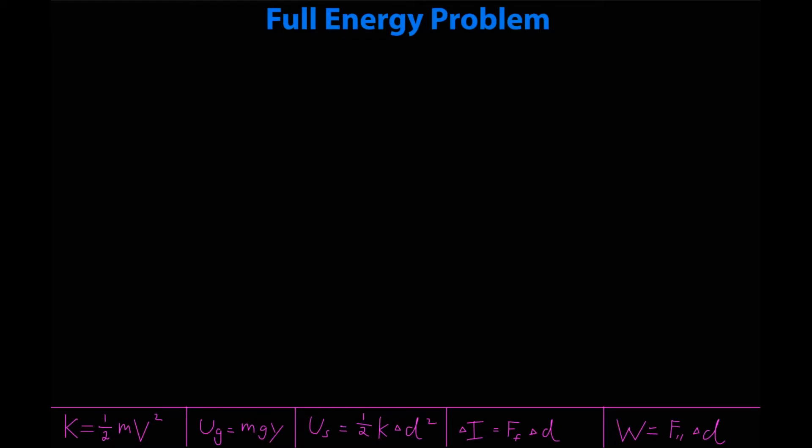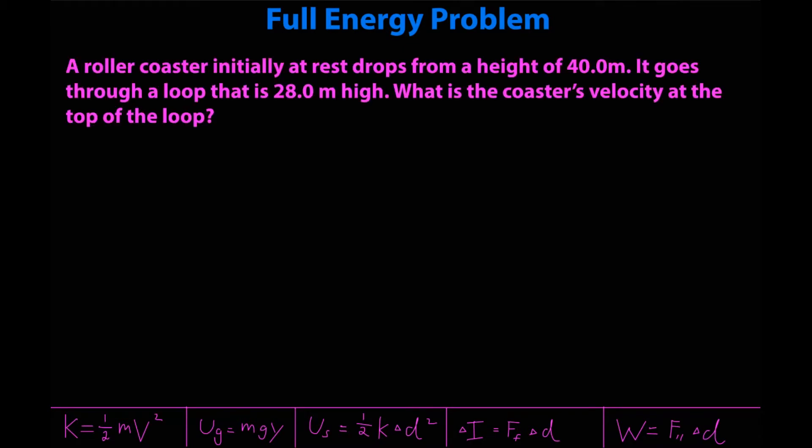Hello everyone and welcome back. Let's take everything we have learned and do a real energy problem. Before we do the real energy problem we're going to do a bit of a warm-up. It uses all the same techniques but it's just a little bit of a lower level but it's still a very common problem. We're going to start with this. A roller coaster initially at rest drops from a height of 40 meters. It goes through a loop that is 28 meters high. What is the coaster's velocity at the top of the loop?